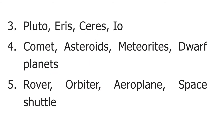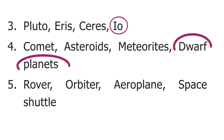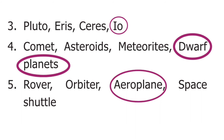The third question is: Pluto, Eris, Ceres, Io. The answer is Io. The fourth question is: Comet, Asteroids, Meteoroids, Dwarf Planets. The answer is Dwarf Planets. The fifth question is: Rover, Orbiter, Aeroplane, Space Shuttle. The answer is Aeroplane.